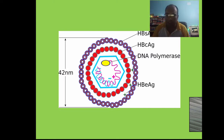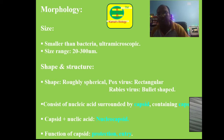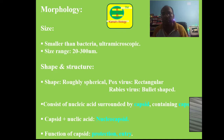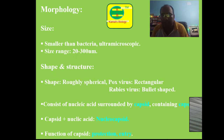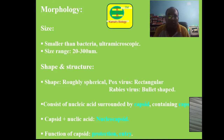Now you can see the morphology. The size of a virus is 20 to 300 nanometers. The structure can be roughly spherical; rabies virus is bullet-shaped; pox virus is rectangular in shape. Viruses have different types of shapes — they may be round, bullet-shaped, or rectangular.